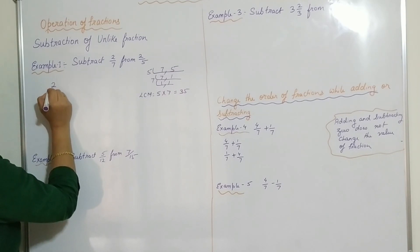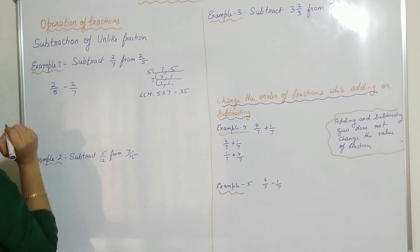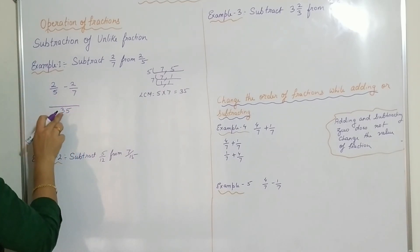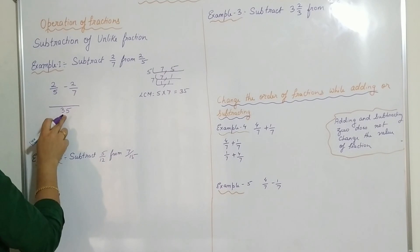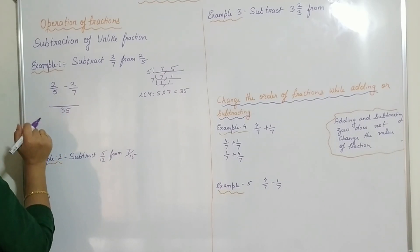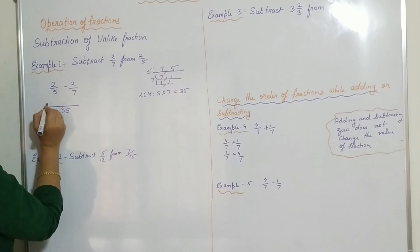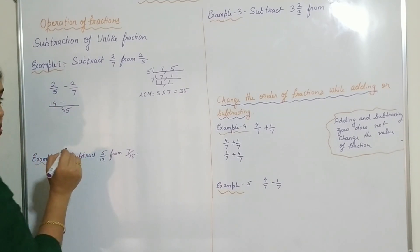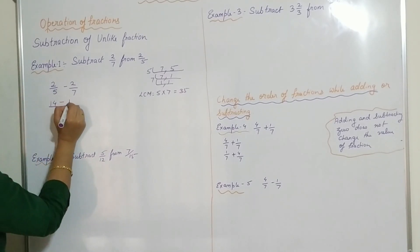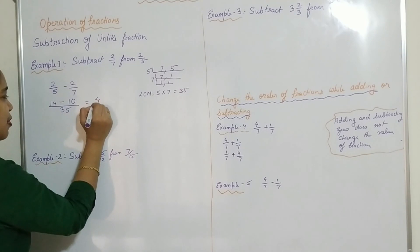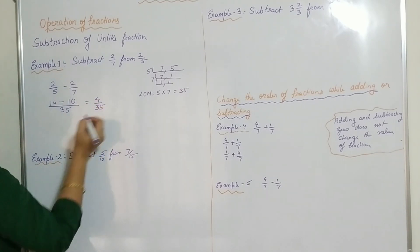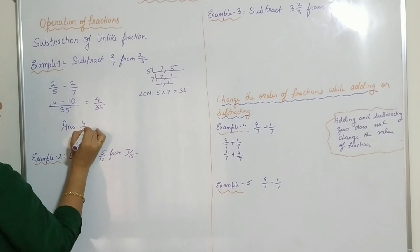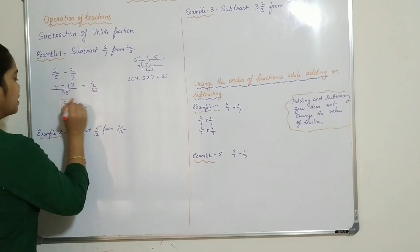So the question is 2 by 5 minus 2 by 7. We will take the LCM as 35. 35 divided by 5 is 7, and 7 into 2 is 14. 35 divided by 7 is 5, and 5 into 2 is 10. So 14 minus 10 gives us the answer 4 by 35.